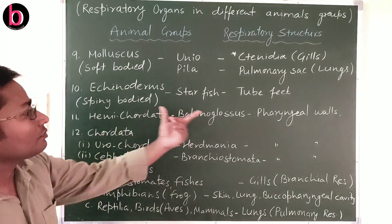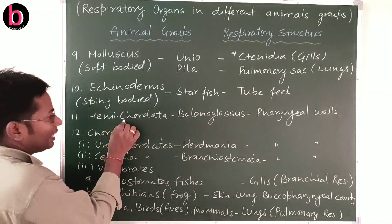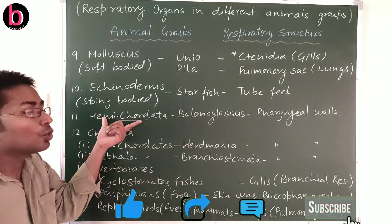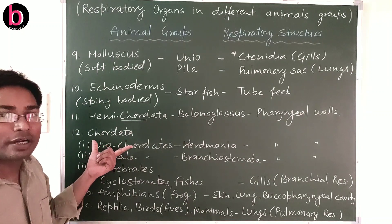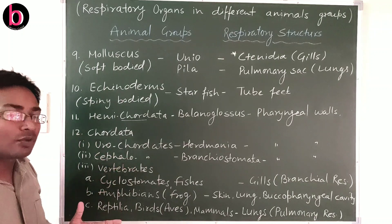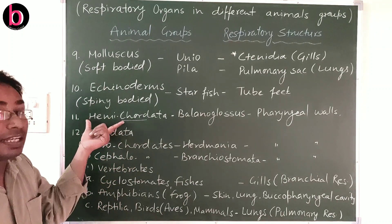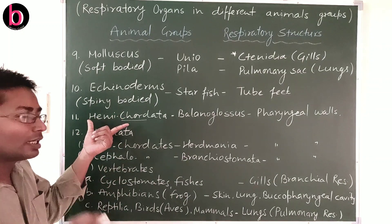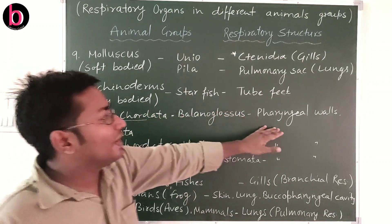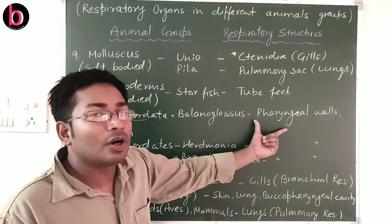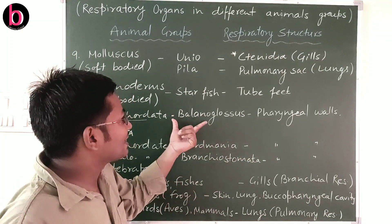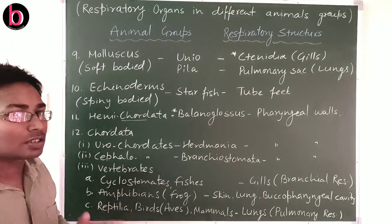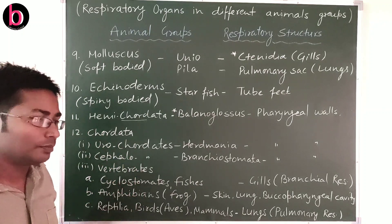The next phylum is Hemichordata, represented by Balanoglossus. Hemichordata was earlier classified under Chordates, but it was found that they lack a notochord — one of the three primary chordate features (notochord, nerve cord, and pharyngeal gills). Their structure was later called stomochord. Hemichordates carry out gaseous exchange through pharyngeal walls.